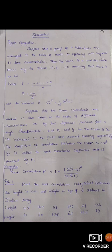Rank is nothing but a group of N individuals arranged in the order of merit or efficiency with respect to some characteristics. These criteria we give some ranks as a variable which takes only the values 1, 2, 3 etc., and assuming that there is no tie. Using these values,